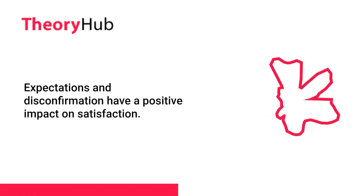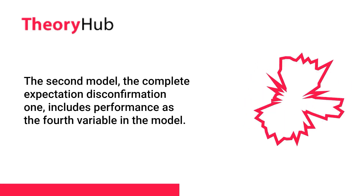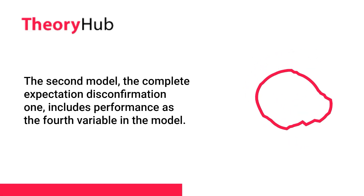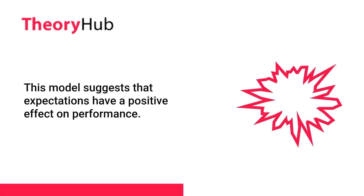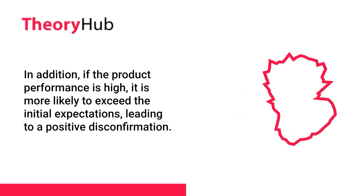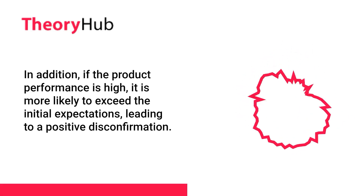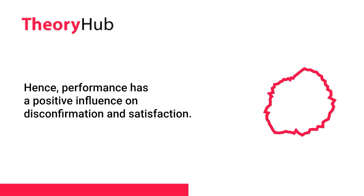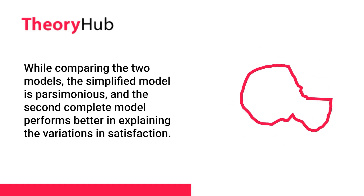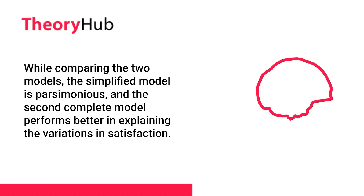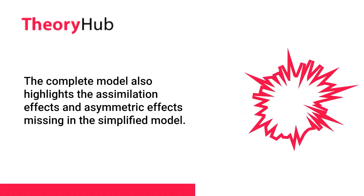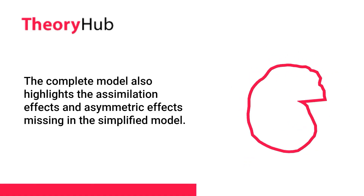Expectations and disconfirmation have a positive impact on satisfaction. The second model, the complete expectation disconfirmation model, includes performance as a fourth variable. This model suggests that expectations have a positive effect on performance, and if product performance is high, it is more likely to exceed initial expectations, leading to positive disconfirmation. Hence, performance has a positive influence on disconfirmation and satisfaction. While the simplified model is parsimonious, the complete model performs better in explaining variations in satisfaction and highlights assimilation effects and asymmetric effects missing in the simplified model.